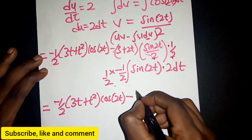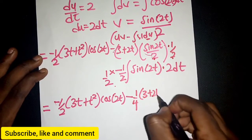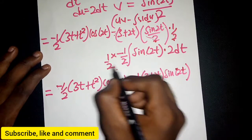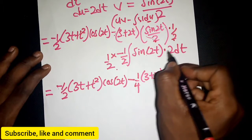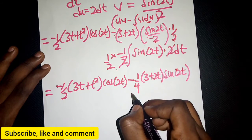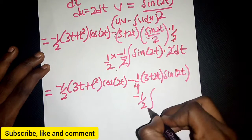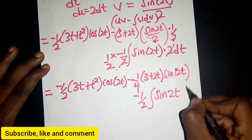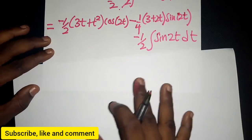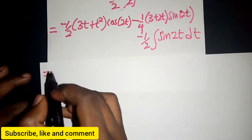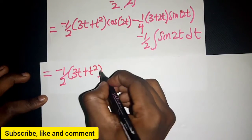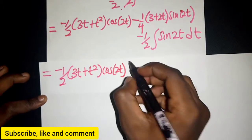So combining: multiplying gives 1/4·(3 + 2t)·sine(2t), and we still have -½ times the integral of sine(2t) dt. Bringing everything together: -½·(3t + t²)·cos(2t) minus 1/4·(3 + 2t)·sine(2t) and then this remaining integral.